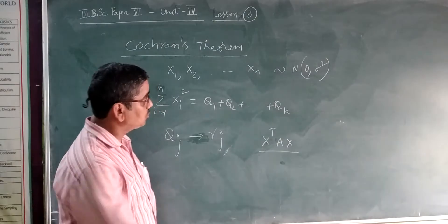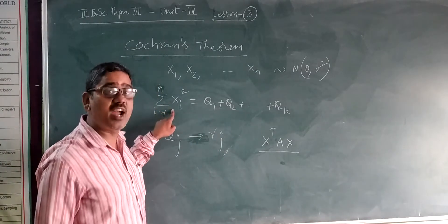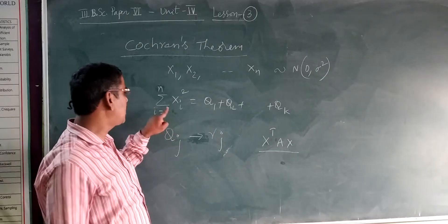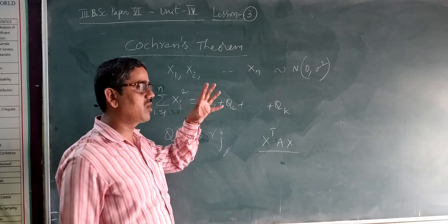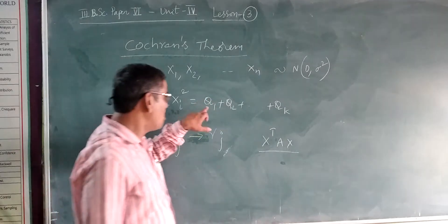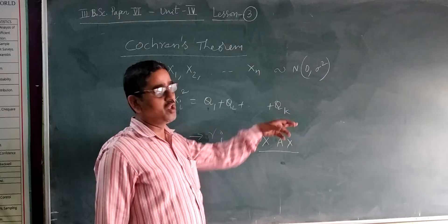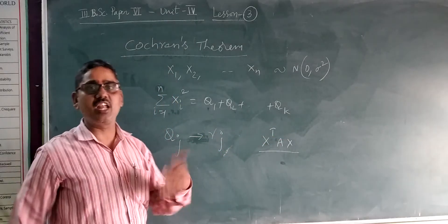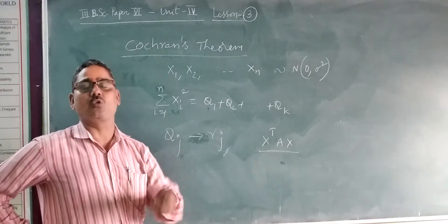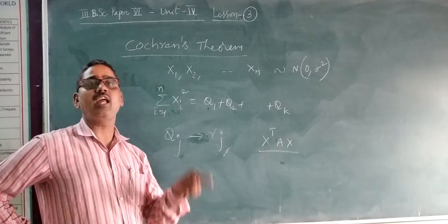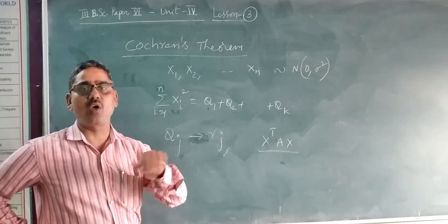Such a form is what we are considering. That is the reason why we have specified that summation i equals 1 to N of Xi squared equals Q1 plus Q2 plus QK, where every QJ is a quadratic expression in X1, X2, ..., XN — that is, the sum of squares of X1, X2, ..., XN.